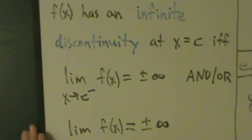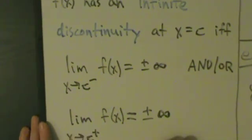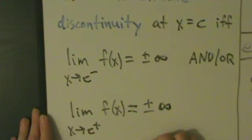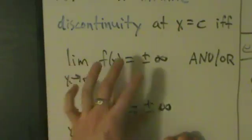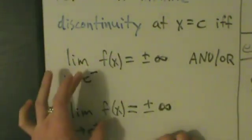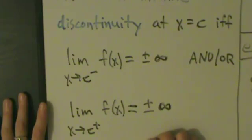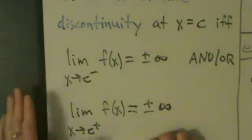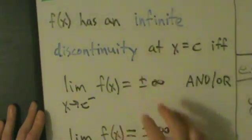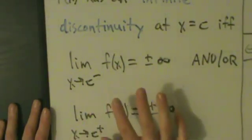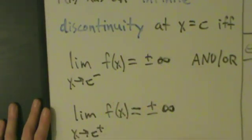So basically it's like a vertical asymptote. You might be thinking: what about the two-sided limit? Well, if both of these are positive infinity or both are negative infinity, then you'll have the two-sided limit — but it doesn't really matter. To have an infinite discontinuity, you just need one of these to be positive or negative infinity.